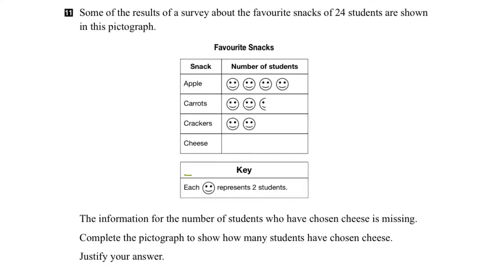Let's start with the key. Each one of these smiley faces represents two students. So let's see how many students liked Apple — two students, two students, two students, and two students there, for a total of eight students liking Apple snacks.